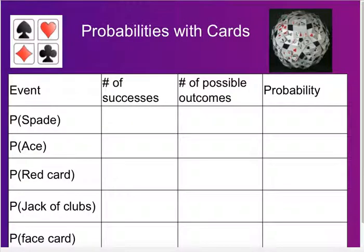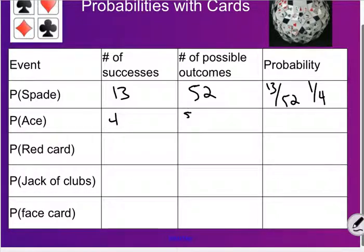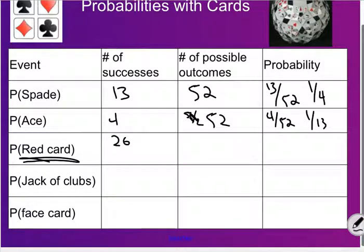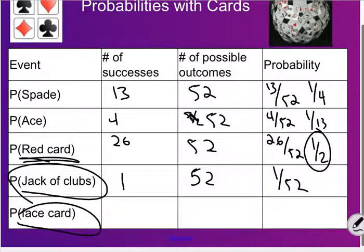Taking a look at probabilities with cards — there are 52 cards in a deck. Probability of a spade: there are 13 spades out of 52 total cards, so 13 out of 52, better known as one fourth. Probability of an ace: there are four aces out of 52, so four out of 52 is one thirteenth. Probability of a red card: there are 26 red cards out of 52, so that's one half. The jack of clubs — there's only one jack of clubs, so one out of 52. Probability of a face card: there are 12 face cards out of 52, which simplifies to three out of thirteen.